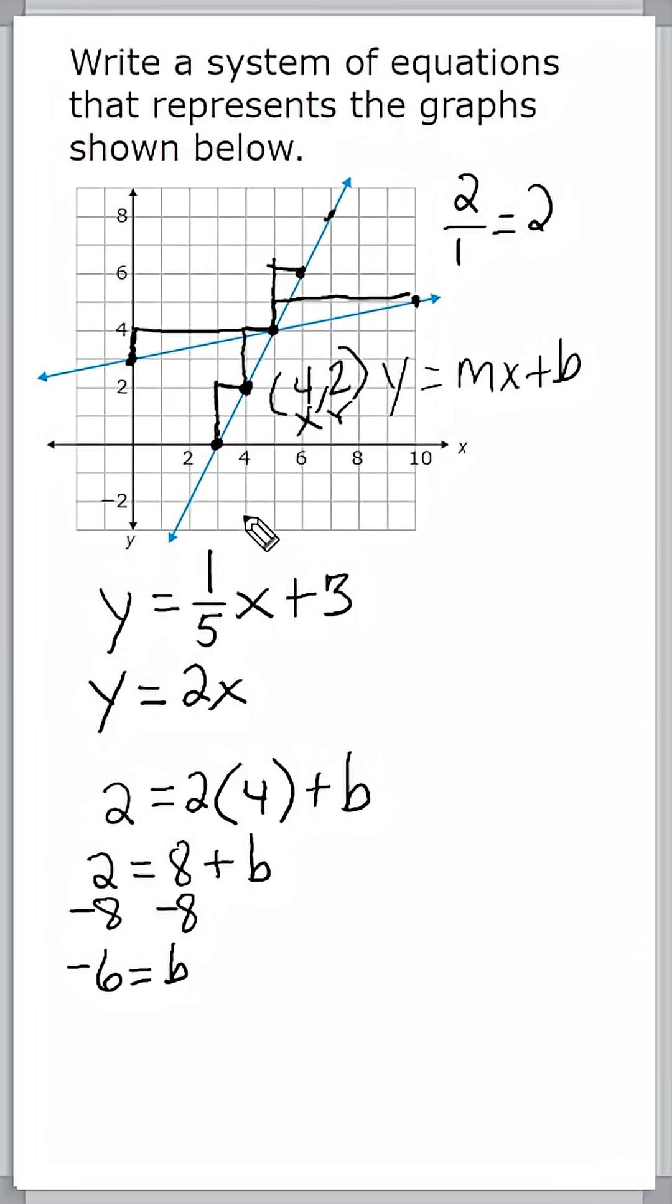So we can see that b for this line would be equal to negative 6. So we can just write negative 6 or minus 6 at the end of our equation because our line would cross the y-axis at negative 6. So this right here is the system of equations that represent these two graph lines on the coordinate plane.